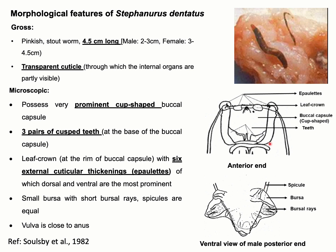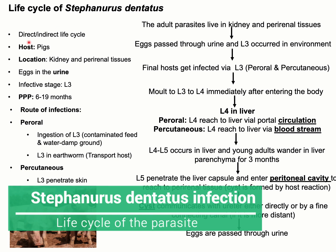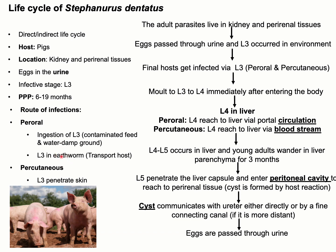The life cycle of Stefanurus dentatus or pig kidney worm can be direct or indirect. In the indirect life cycle there is involvement of earthworms, where L3 will be developed. The final host is the pig, and the parasite is located in the kidney and perirenal tissues. Eggs are passed in the urine and the infective stage is L3. The route of infection is oral or percutaneous. In the oral route, the final host is infected after ingesting contaminated food and water containing L3.